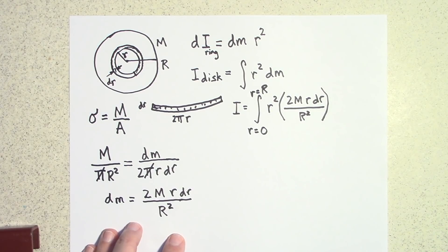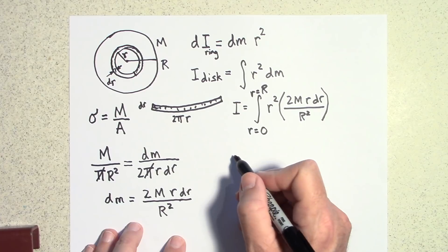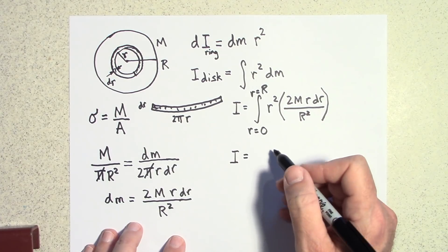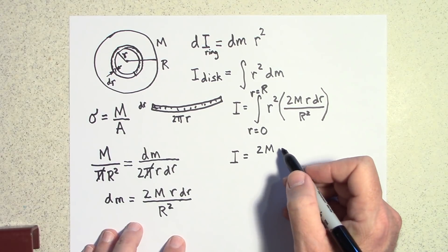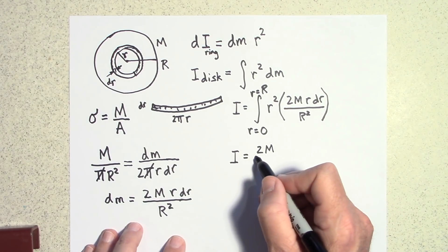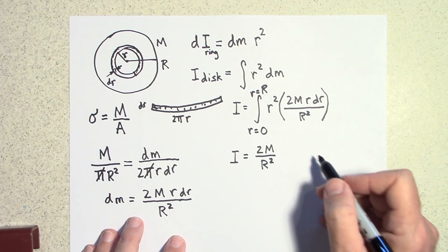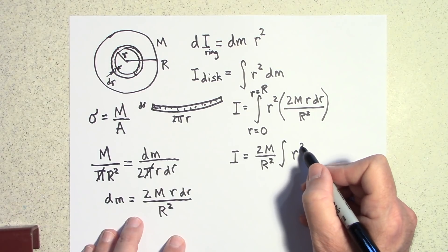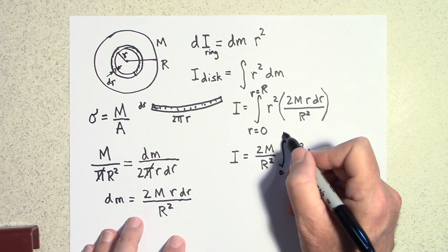So now the math knows that when it's adding these up, these little rotational inertias up, it should go from zero to capital R. All right, so now I just have to solve for this thing. So what I'm going to do is I'm going to bring all the constants out in front. So I is equal to, bring all the constants out, I got a 2m over r squared, and then inside my integral I have r cubed dr and I'm going from zero to capital R.